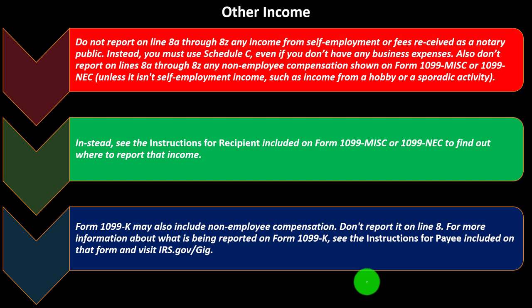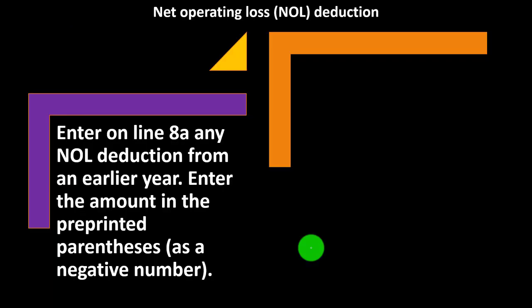Form 1099-K may also include non-employee compensation — don't report it on line 8. For more information, see the instructions for payee on that form and visit irs.gov/gig. If you received a 1099-K, it might be from the gig economy, and the IRS would most likely assume you need a Schedule C unless an exception applies, such as the activity being a hobby.